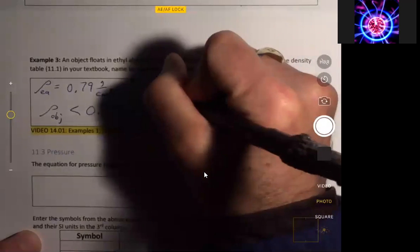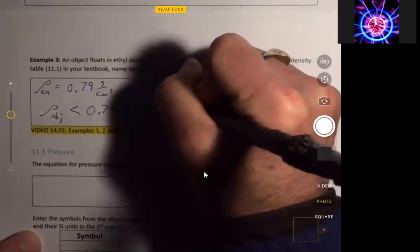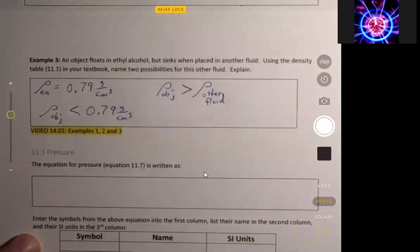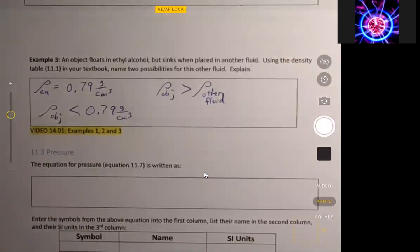It also means the density of our object is greater than the density of our other fluid, because it sinks in the other fluid. So it says name two other possibilities. You look at that table 11.1, and there's one obvious choice there. Right below, ethyl alcohol has a density of 0.68. So that's less than ethyl alcohol's density.